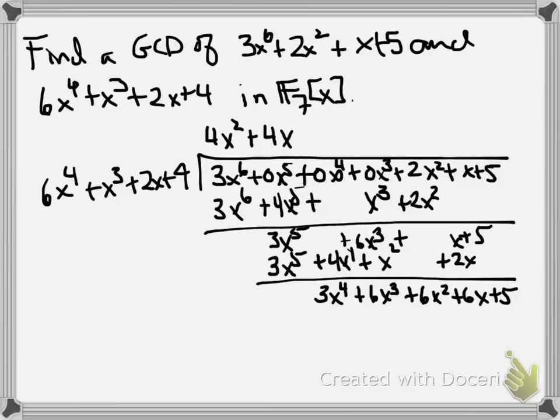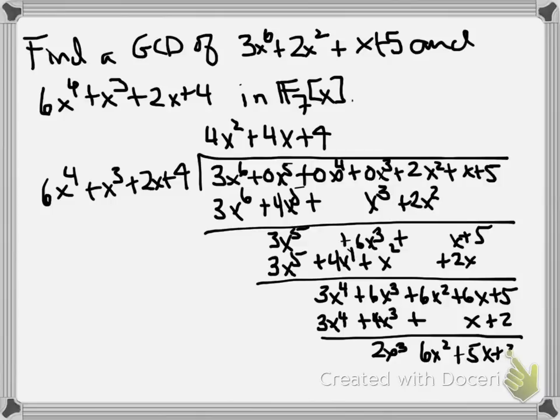Okay, now we've got the x^4, so we just need the 3. So we're going to need another plus 4 to finish off the quotient here. So we get 3x^4 + 4x^3 + x + 2. Subtracting leaves us with 2x^3 + 6x^2 + 5x + 3. That has smaller degree than the divisor 6x^4 + x^3 + 2x + 4, so we need to go do another long division.